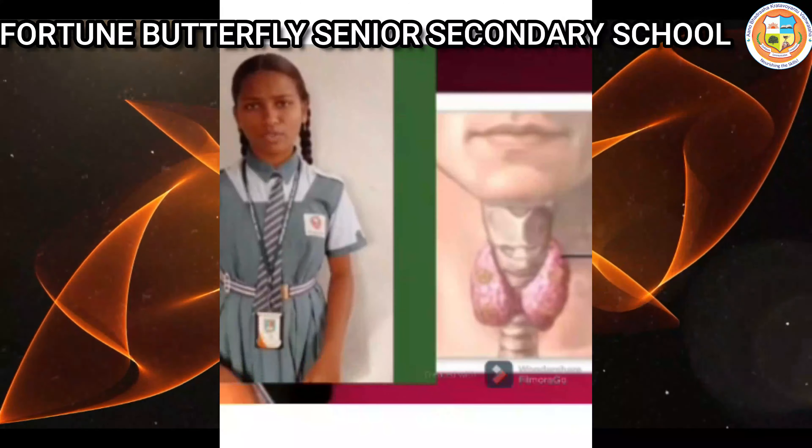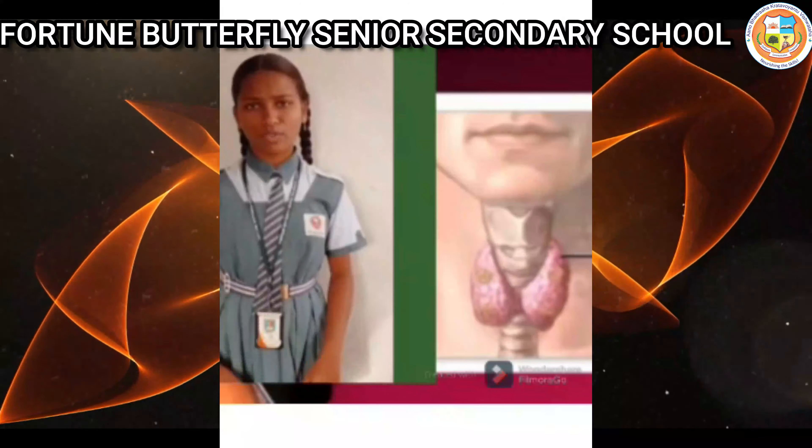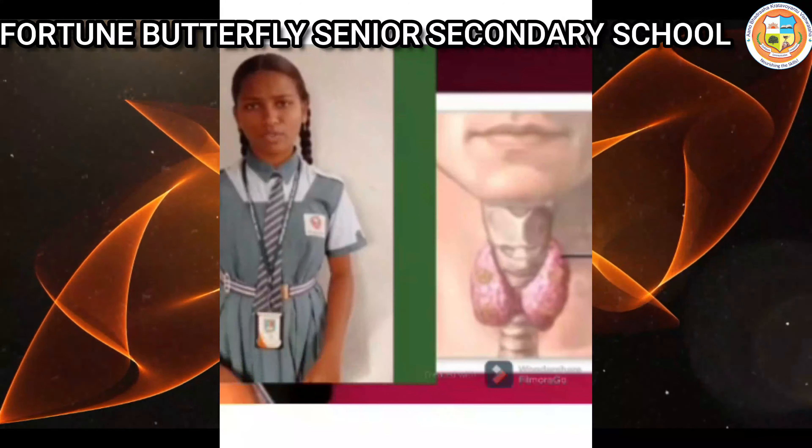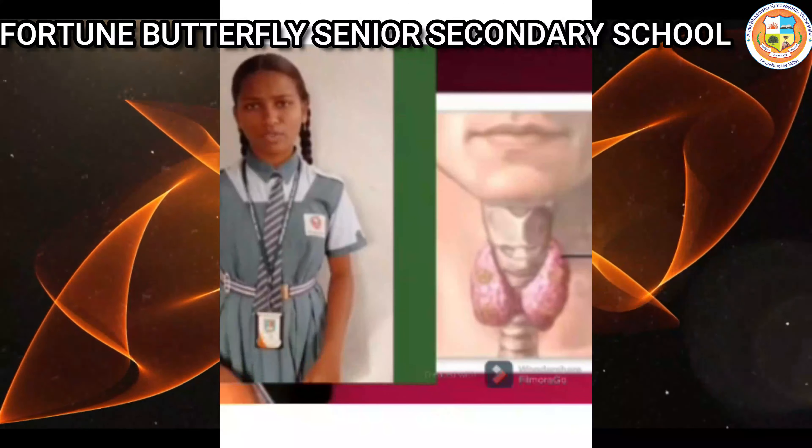The pituitary gland stimulates the ovaries to produce their hormones. The pituitary gland controls dwarfism and gigantism. The pituitary gland also stimulates other endocrine glands such as the thyroid, pancreas, and adrenals.